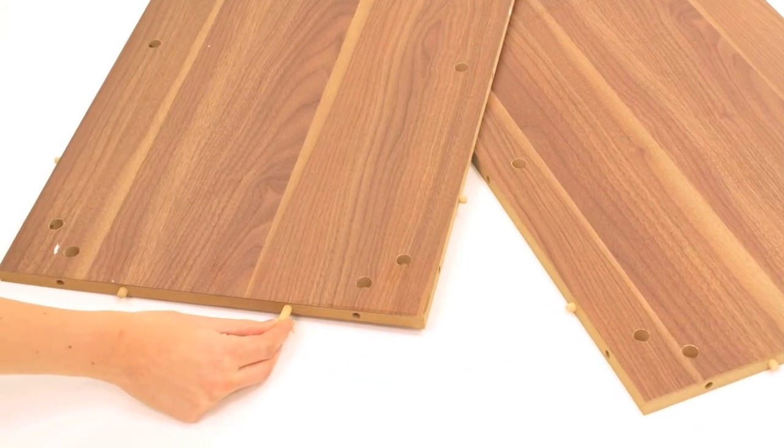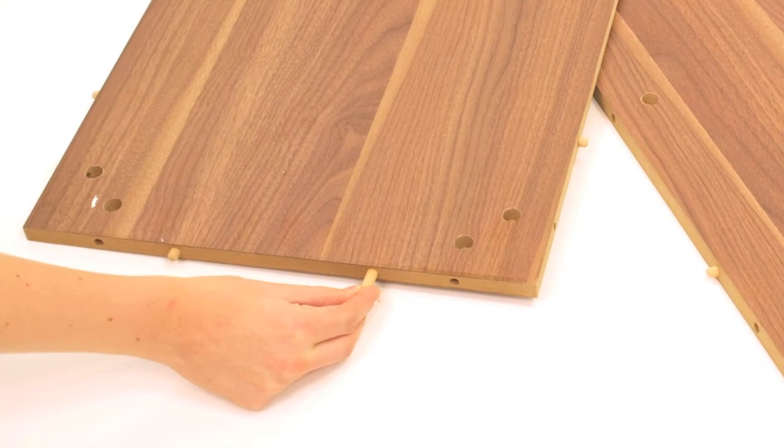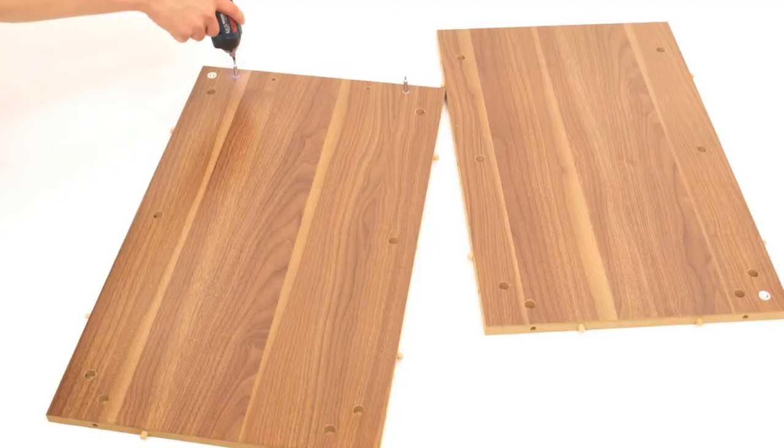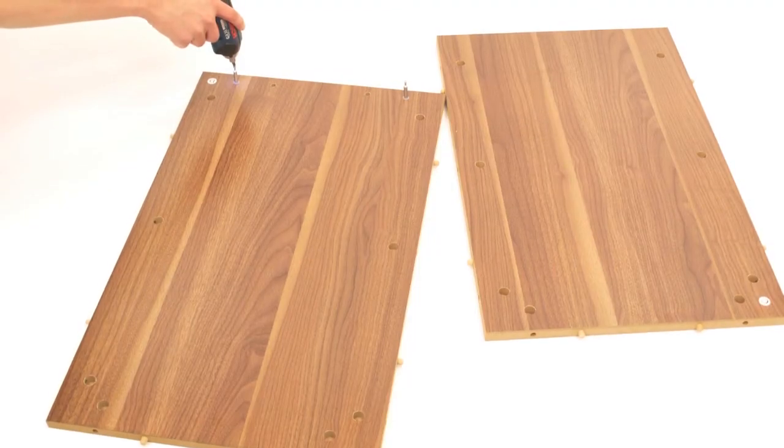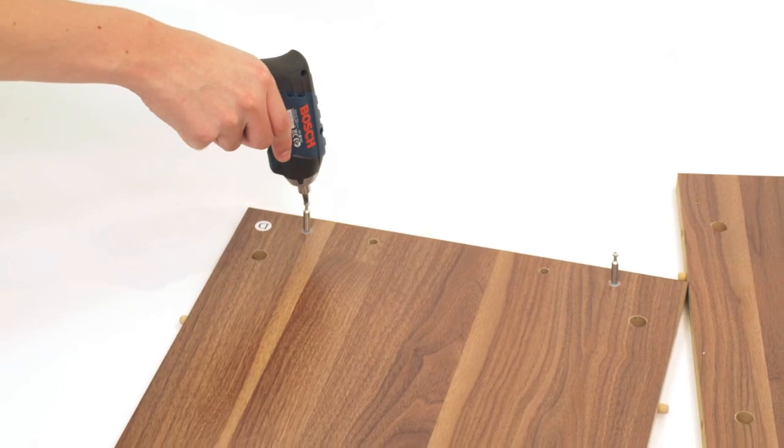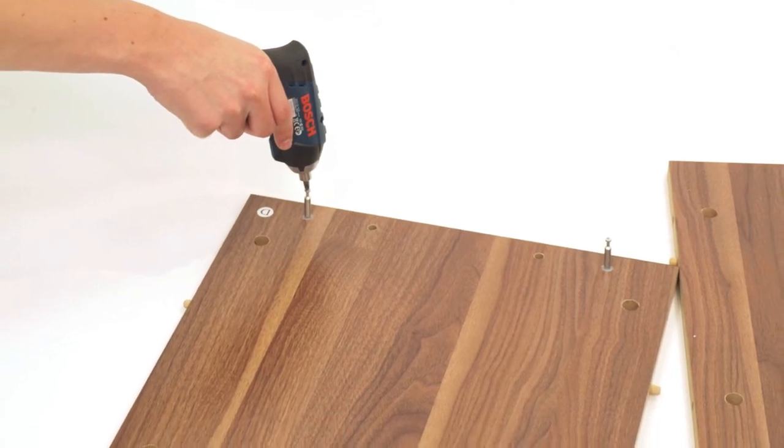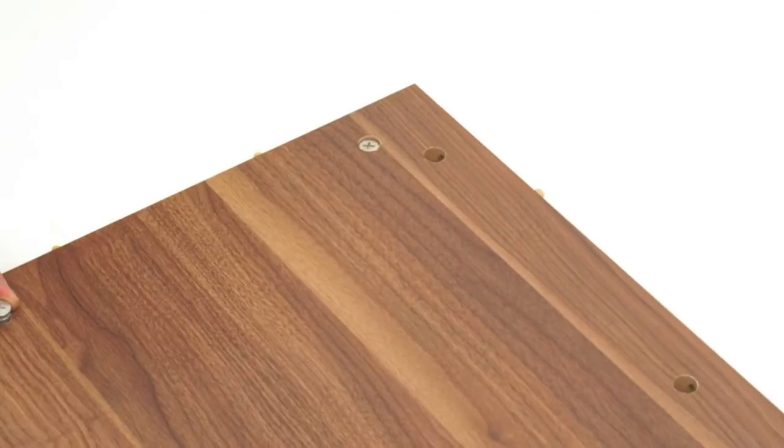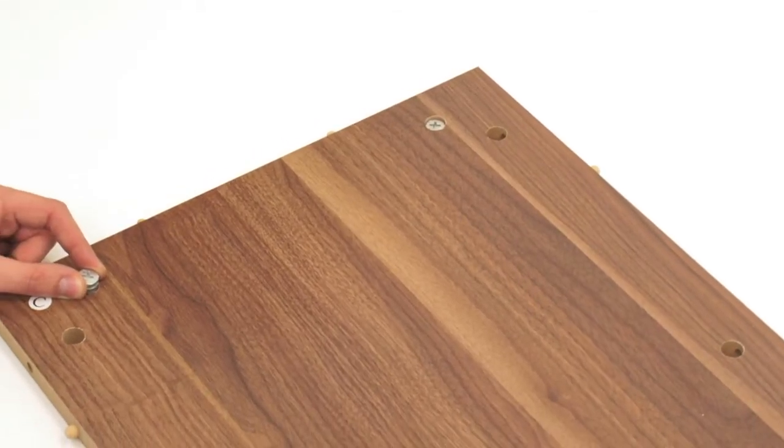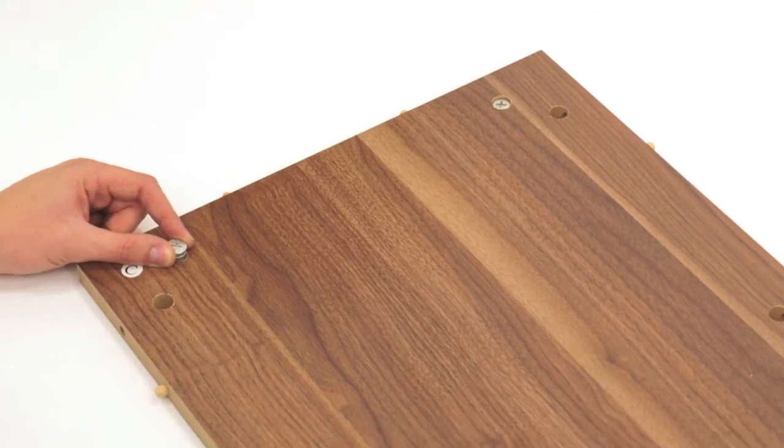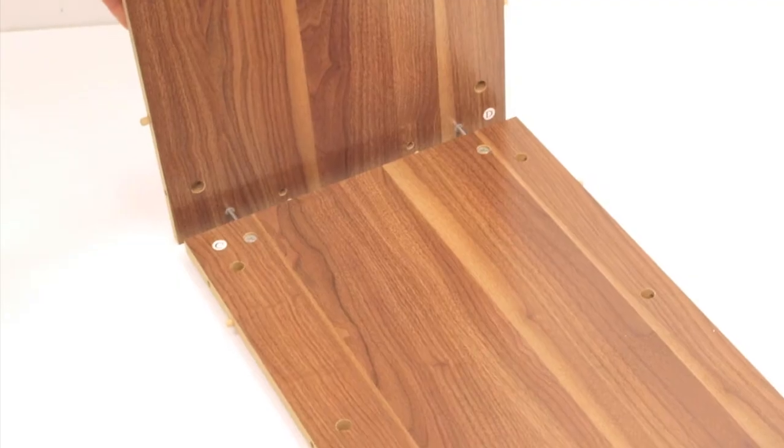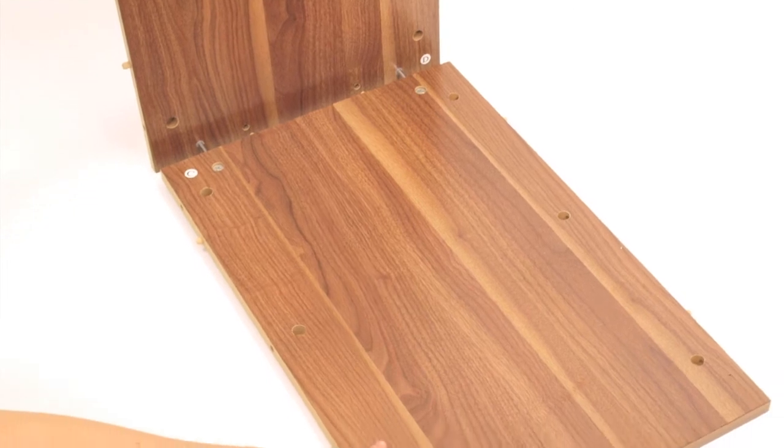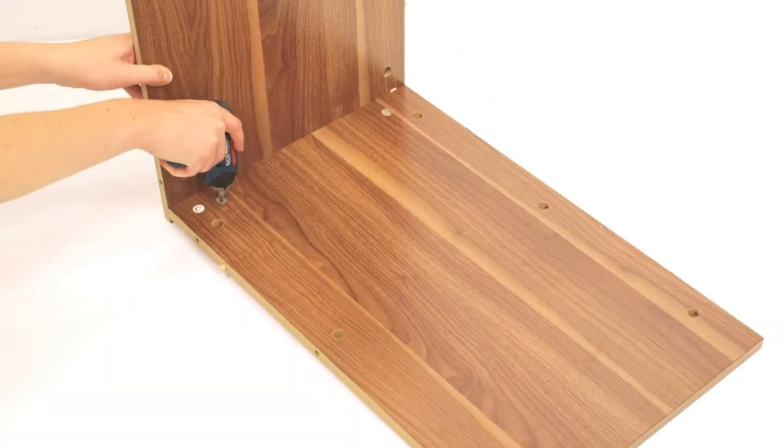Next, insert 12 wooden dowels into the holes in the edges of panels C and D. Now, screw two metal dowels into the holes on the top face of part D. Push two cam fixings into the corresponding holes on the top face of part C. Then, push the two parts together and tighten the cam fixings as shown.